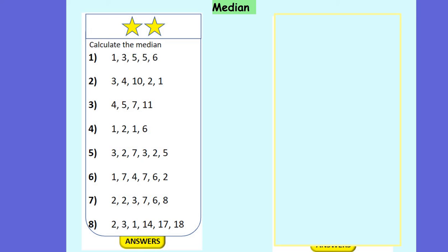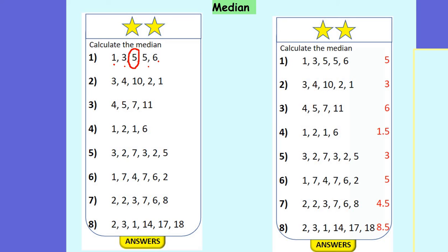Over to you guys in your light blue books. Please pause the video for 5 to 10 minutes and find the median for each of these sets of values. Remember, you need to start by putting them in order and then find the middle number. If there's an odd number of values, that makes your life a lot easier because the number will already be in the middle. The answers are up on the board — please check your work and see how you did.